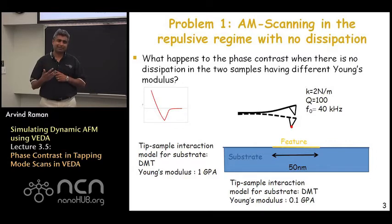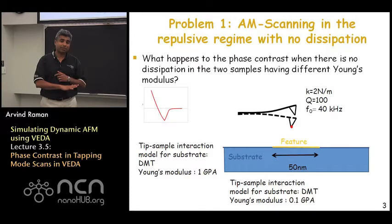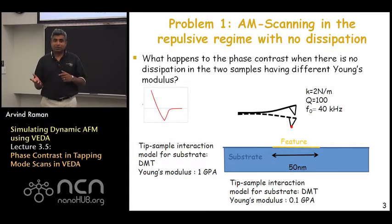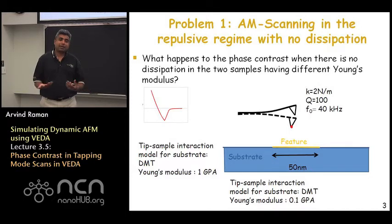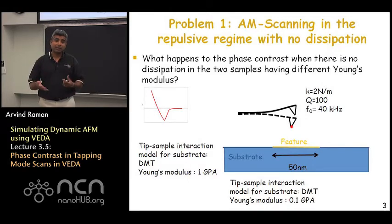We also talked about the fact that you could have situations where you choose a set point where over part of the sample you are in the attractive regime and part in the repulsive regime. In those cases you would get an image where the phase lag is sometimes greater than ninety degrees in some parts and less than ninety degrees in other parts. That tells you it is very hard to compare what is happening in terms of energy dissipation, because one part corresponds to attractive and another to repulsive.